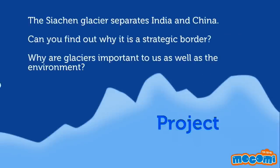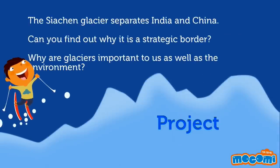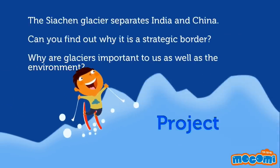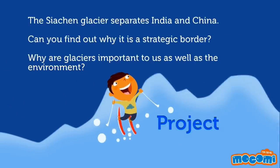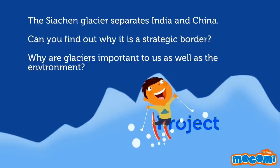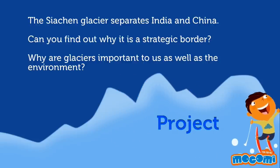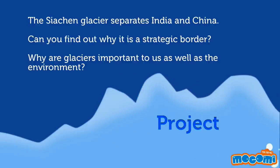The Siachen Glacier separates India and China. Can you find out why it is a strategic border? Why are glaciers important to us as well as the environment?